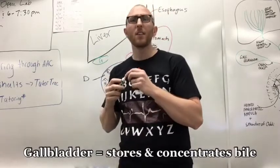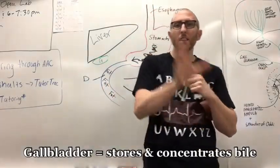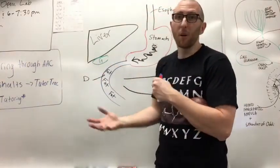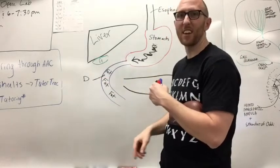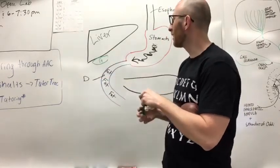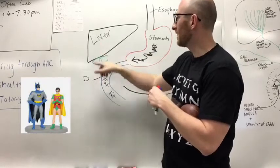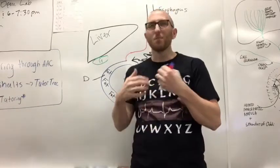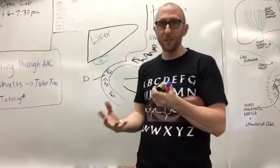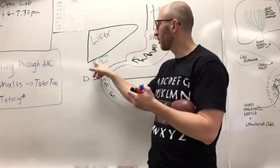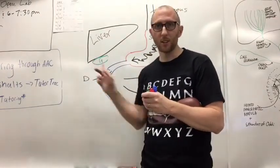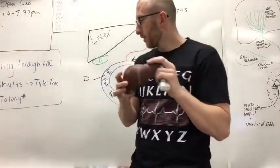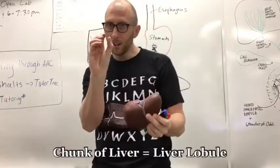Now, what does the gallbladder do? It stores and concentrates bile. So the liver and the gallbladder, they're partners, they're hanging out together. I'd say the liver is Batman and the gallbladder is Robin, right? The gallbladder is much smaller. It doesn't do as much of a job as the liver does in producing the bile. But it does play a major role in storing and concentrating it. So we got this liver. And let's say I take a chunk of the liver.